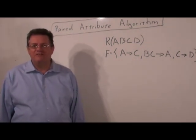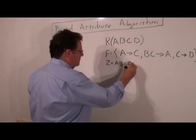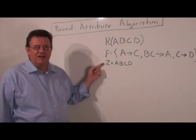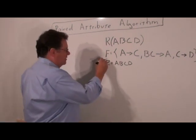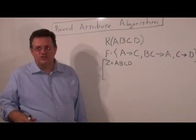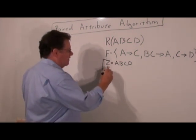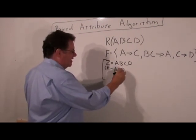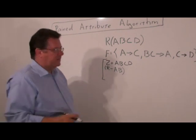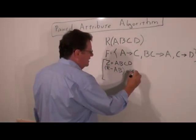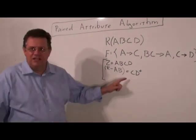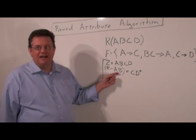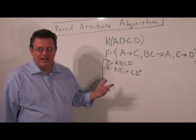First thing we want to do is set up a variable called Z which will contain all the attributes of R. In our main routine, we're going to try R minus the first pair, R minus AB, which in this case equals CD. We take that closure. If that closure contains the A and B, we have a violation and we need to do a decomposition.